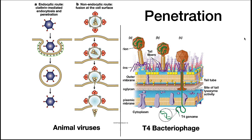Bacteriophage have to contend with the cell wall of the bacterium. Because of this, they will have enzymes and protein functions that inject the genome into the cell. For example, bacteriophage T4 has a tail tube with lysozyme activity at its end. This tail tube behaves like a syringe. The lysozyme degrades the peptidoglycan, and once it punches a hole in the peptidoglycan, the phage injects its genome into the cell cytoplasm.